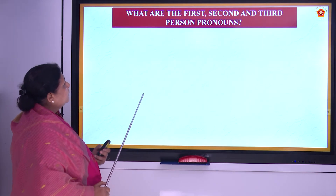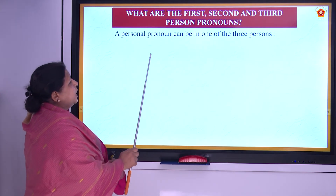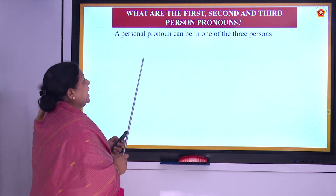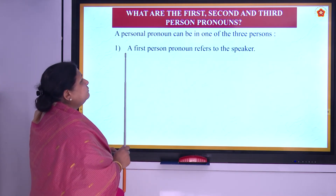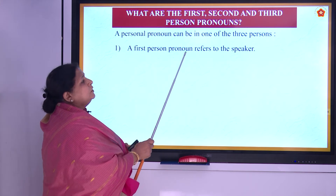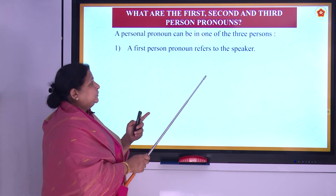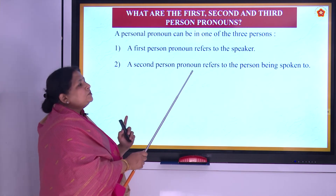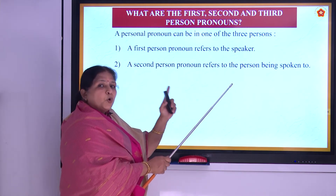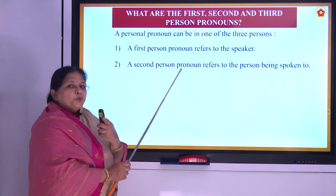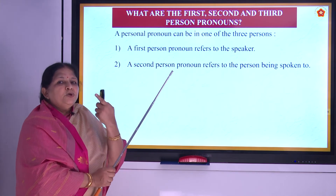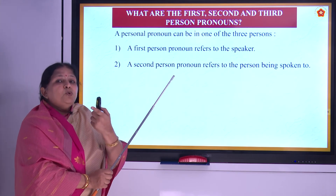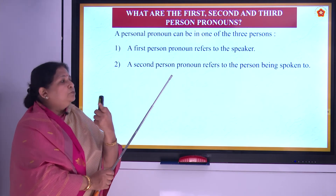A personal pronoun can be one of three persons. The first person pronoun refers to the speaker. The second person pronoun refers to the person being spoken to — that means 'you'. I am the first person; you are the second person because I am speaking and you are being spoken to.